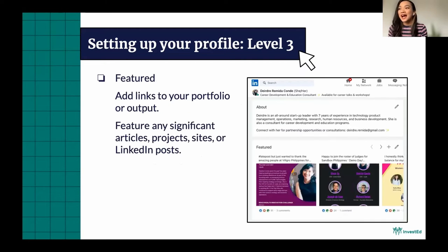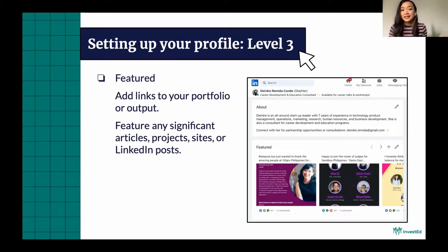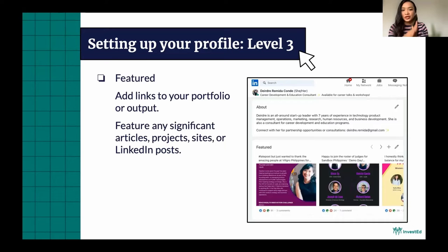Another thing you can add is Featured — it's called Featured. This is where you can add links to your portfolio or your output. If you have an online portfolio, a website, or a blog that you want people to go through, you can add that to Featured. Especially if that blog is professional and you share your professional thoughts there, or your portfolio, or work samples — that's something you can add there.